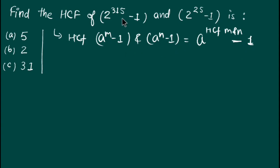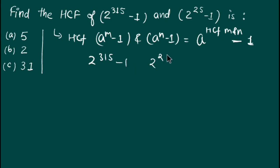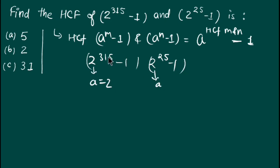Now compare the given question with the identity. We have 2 raised to power 315 minus 1 and 2 raised to power 25 minus 1. We can see that the value of a is 2, the value of m is 315, and the value of n is 25.